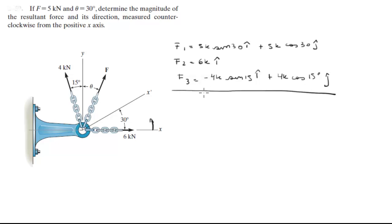When you add this all up, you're going to get that Fr equals 7.465 in the i-direction plus 8.194 in the j-direction.